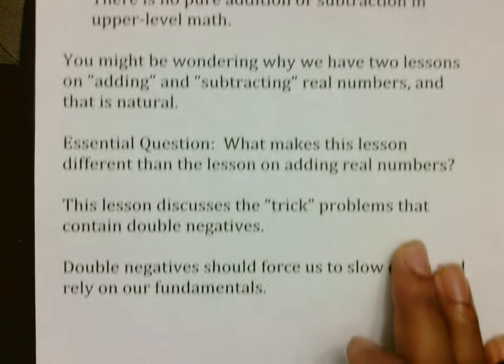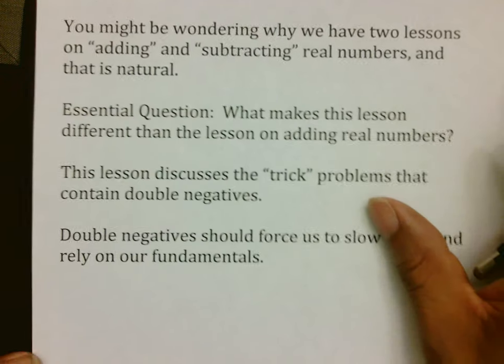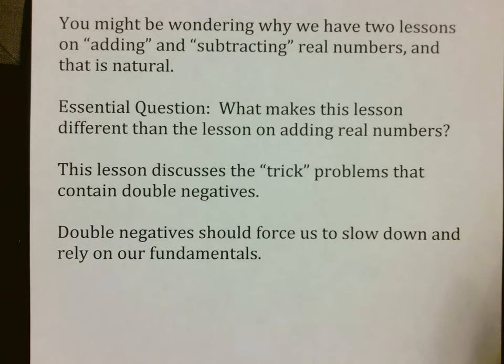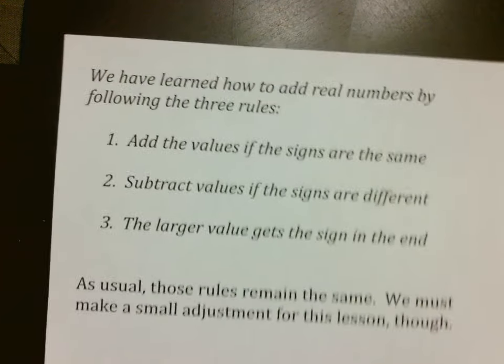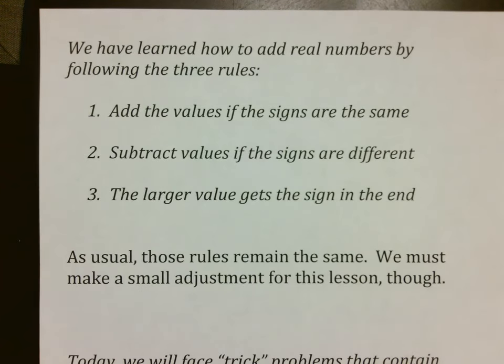So you might be wondering why we have two lessons on adding and subtracting if there is no more pure addition or subtraction. And so that brings us to our essential question, which is what makes this lesson different than the one on adding real numbers? And what this is more about is what I call the trick problems that contain double negatives. Double negatives, if you see them, force us to slow down and rely on our fundamentals. So we've already worked on the rules of adding, which is that we add the values if the signs are the same, we subtract the values if the signs are different, and that the larger number gets the sign at the end.